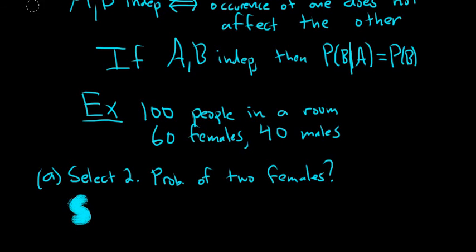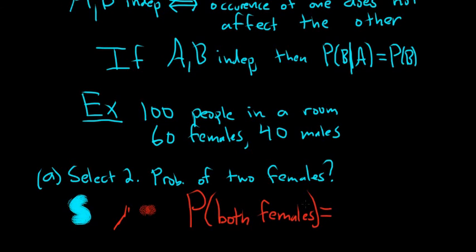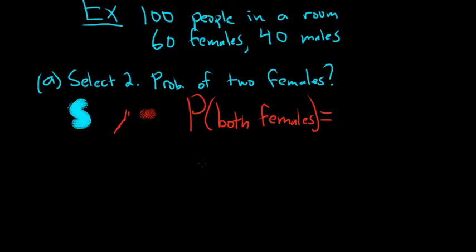So something is wrong with my brush. Let me fix that really quick. There we go. We want the probability that both are female. Whenever you see two females or both females, there is a hidden AND. This is the probability that the first is female and the second is female.